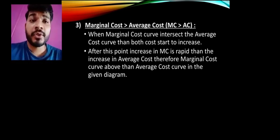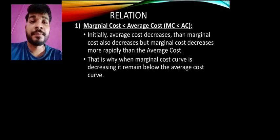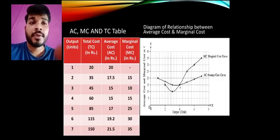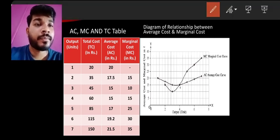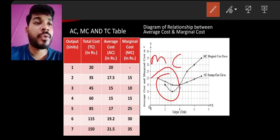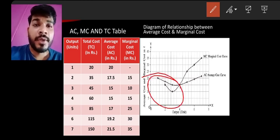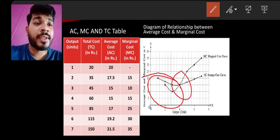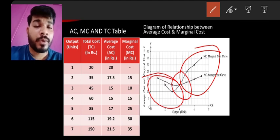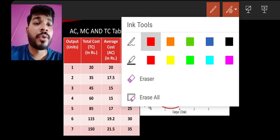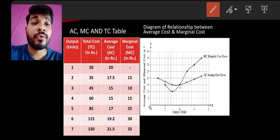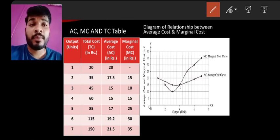To summarize, in the long run a producer must keep the price above the average cost to avoid losses, and in the short run the price must be kept above the marginal cost. The diagram clearly shows: first MC is below AC, then they are equal at the minimum point C, and after that MC rises above AC. I hope this is clear. If you have any doubts, please call or message me. Thank you, bye.